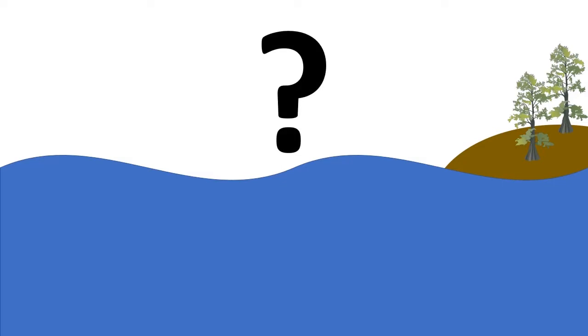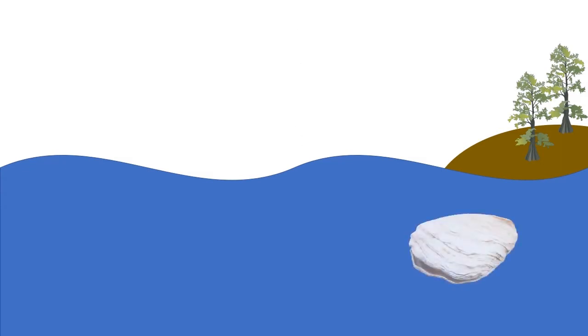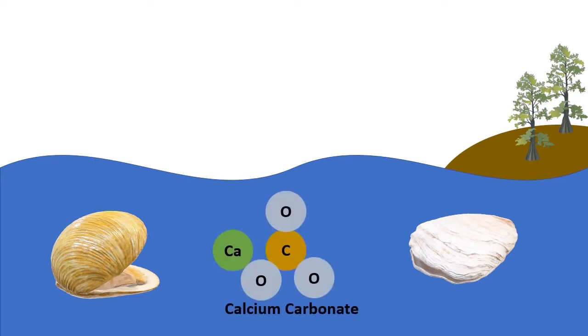So why does this matter in our oceans? All life in the ocean depends on having the right amount of acidity. We can take a look at mollusks for example. These organisms build many of the seashells you find on the beach. The shells are made of a substance called calcium carbonate. Mollusks are able to make this molecule out of carbonate, which is naturally in ocean water.